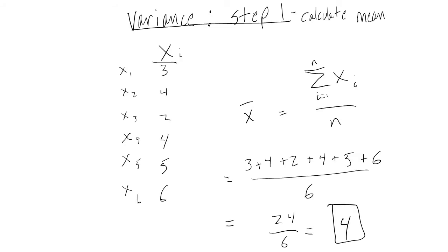The first step when calculating variance is something we already know how to do. We have to calculate the mean for our variable's distribution. We do this by summing all of the values for our variable, then dividing by the total number of values. In this case, our variable's distribution's mean is four.